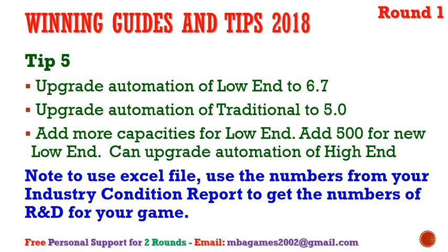From round three or four, we can add more capacity for low-end — this is very important because when adding a new product we have R&D costs, and we need capacity for that product. We can upgrade automation for low-end right from round one. If there is not enough investment, consider selling surplus capacity of traditional and high-end to get enough investment from round one — this is risky but worth considering.